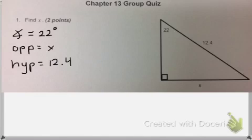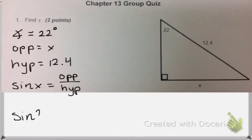Now I ask myself, which trig function uses opposite and hypotenuse? That's sine, because sine of x equals opposite over hypotenuse. You plug in what you have, so sine of 22 degrees equals x over 12.4.